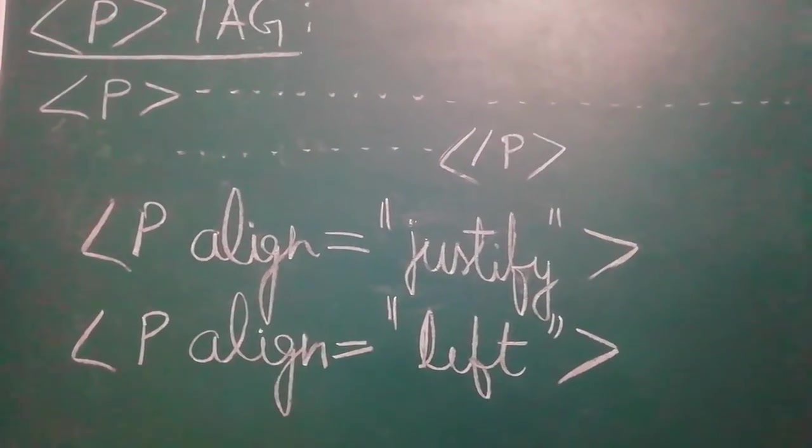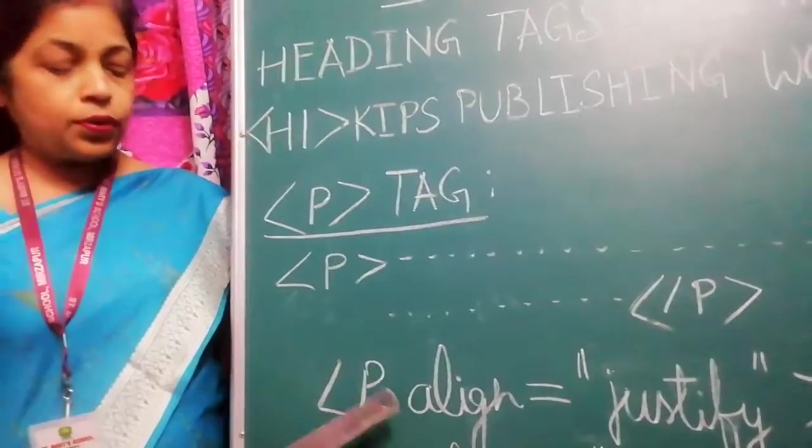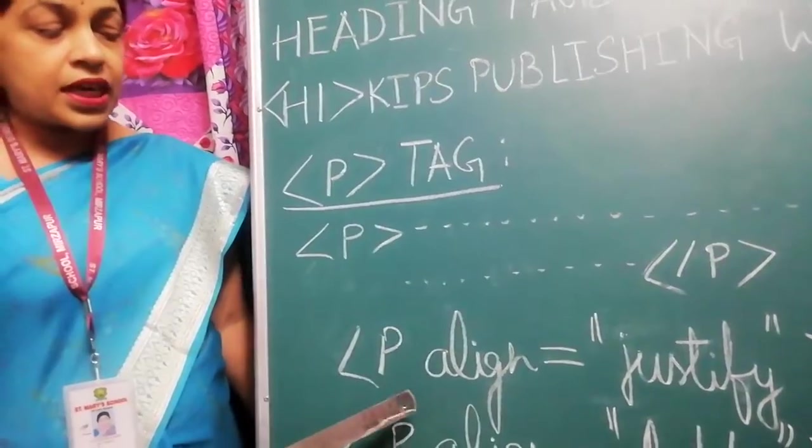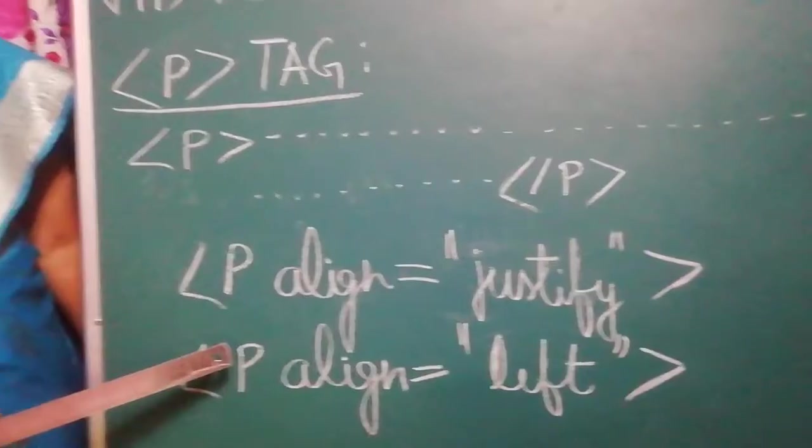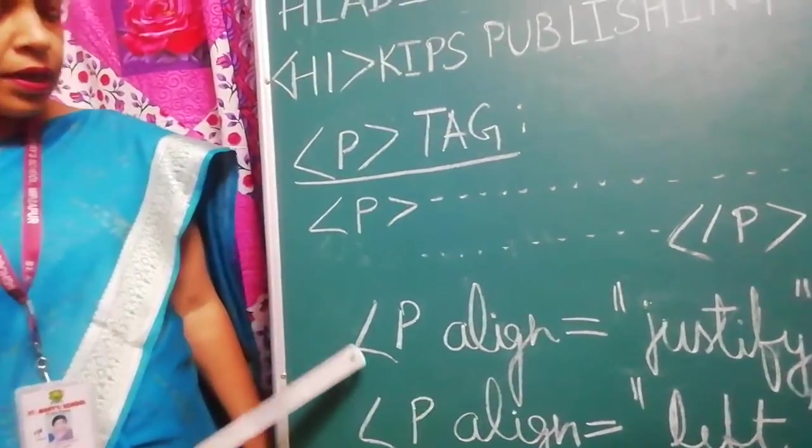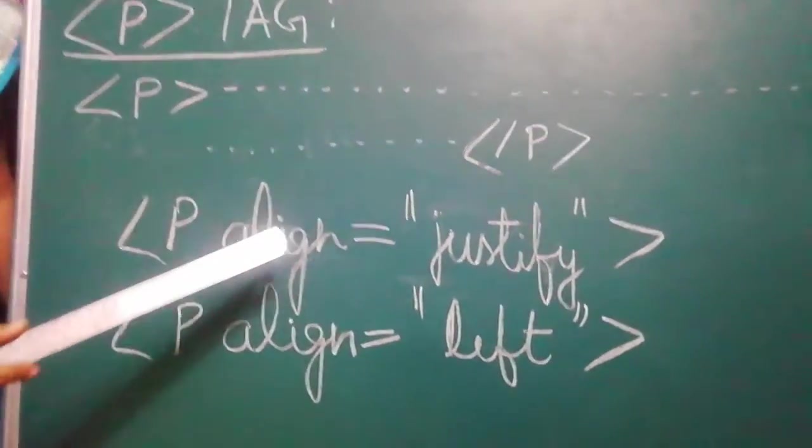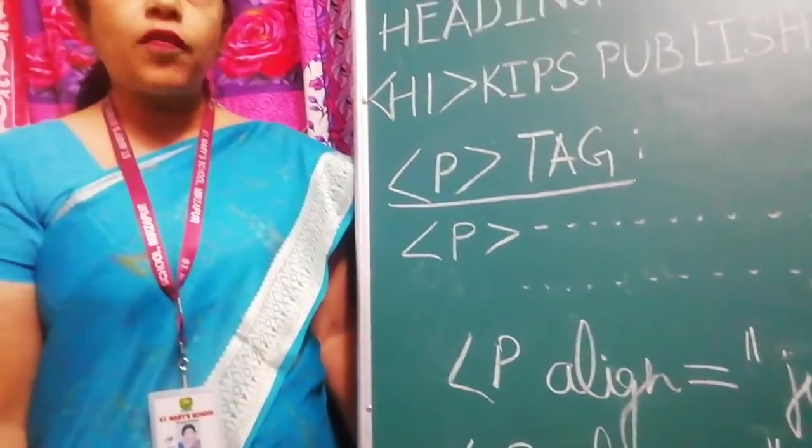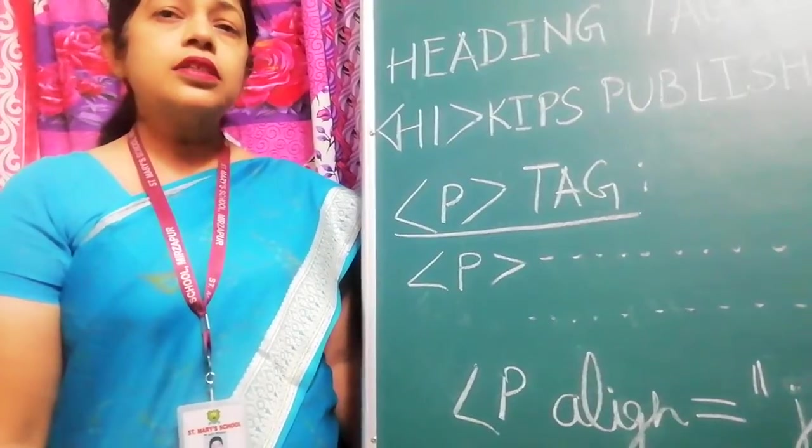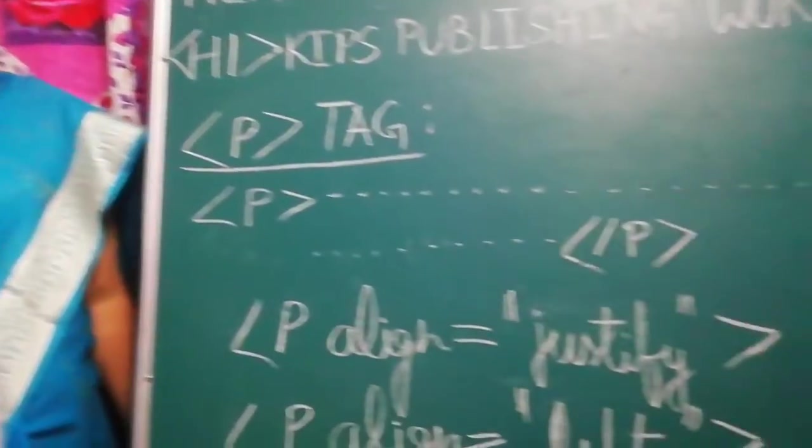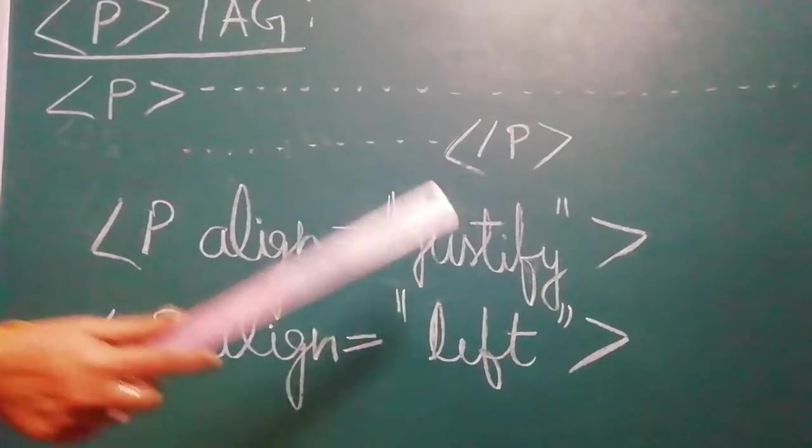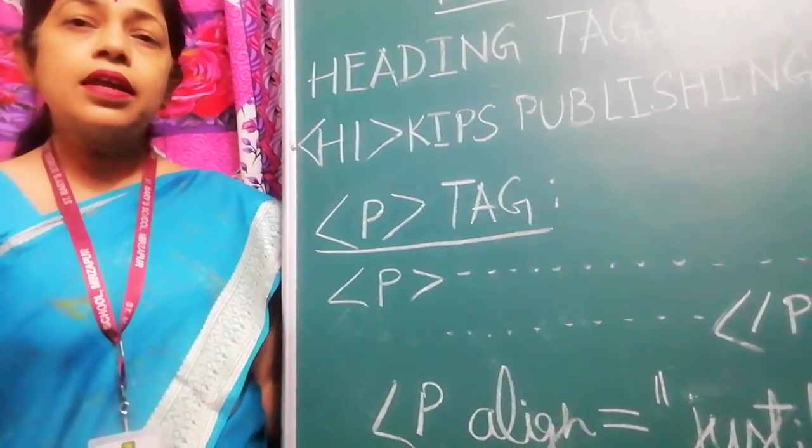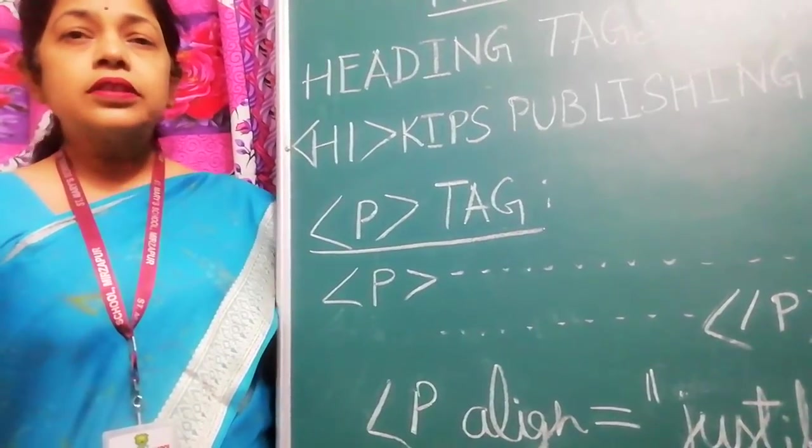We can also use align attribute with the paragraph tag and set the alignment of the paragraph. For example, P align equals justify will set the alignment of the paragraph as justified. And P align equals left will set the alignment of the paragraph as left alignment.